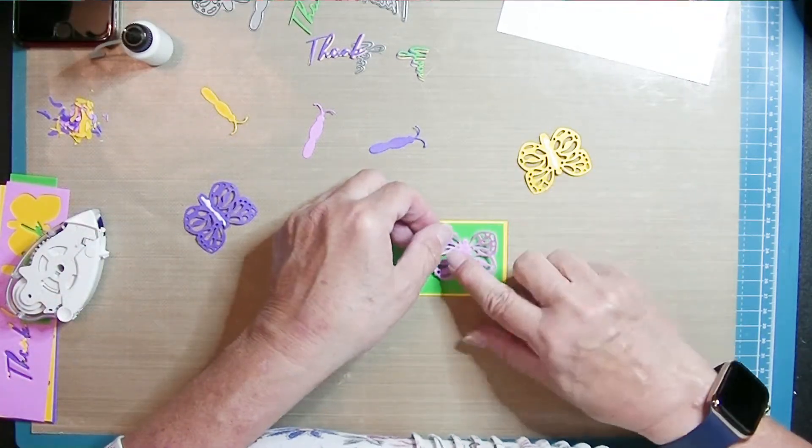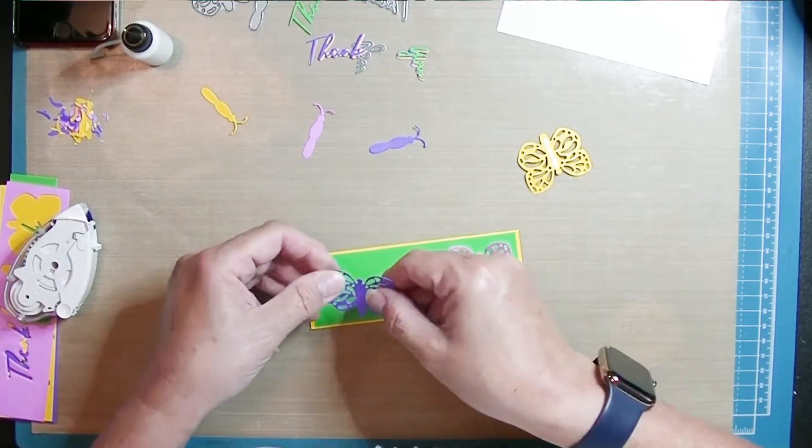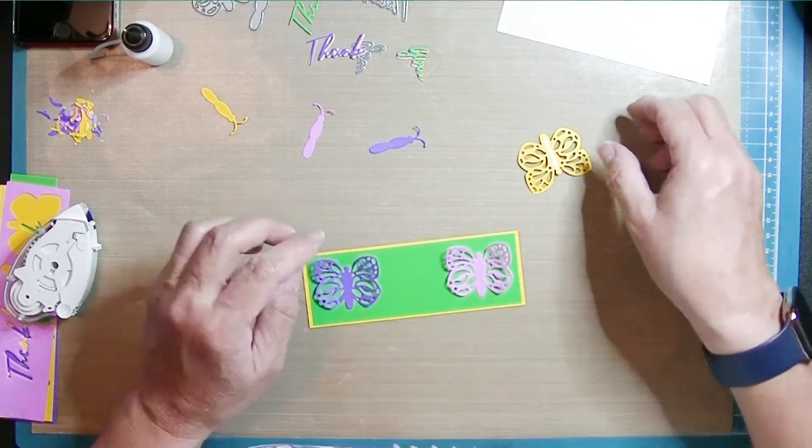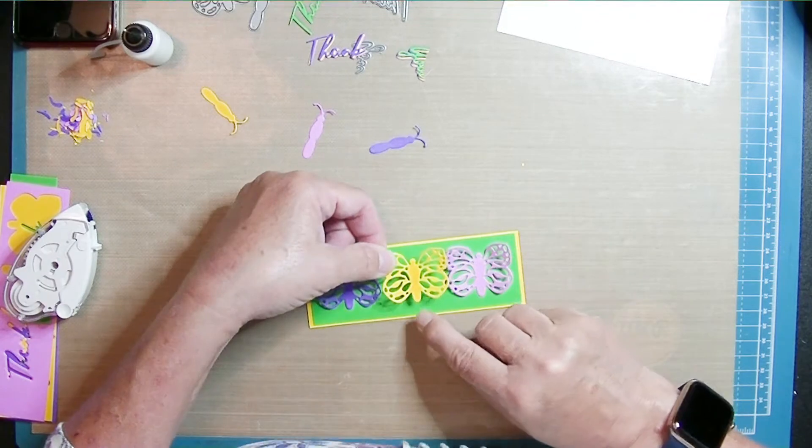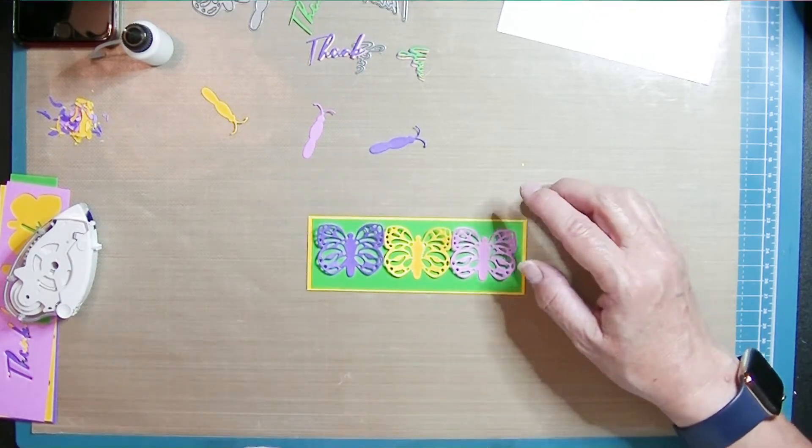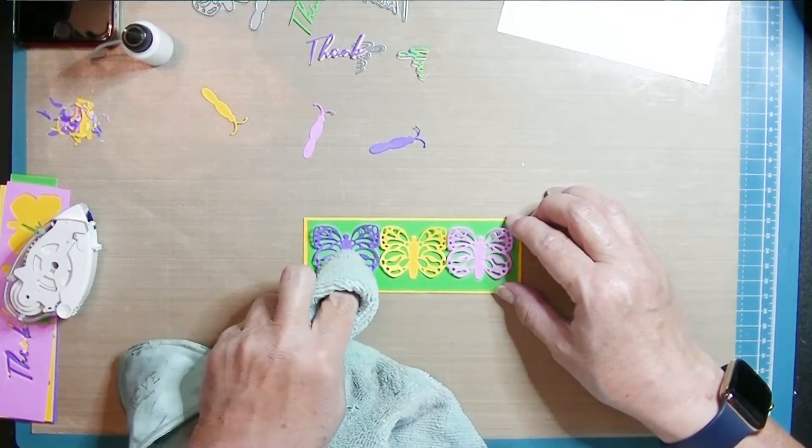And I probably should have started with the center one. But I'm just putting the glue on the body so I can pop up those wings. So my card will have a little bit of dimension. And if that center one overlaps the other two, I'm okay with that. So I'm just dabbing up the glue.